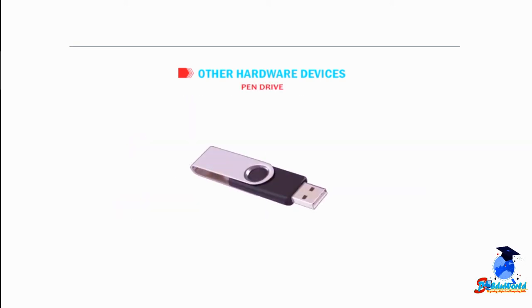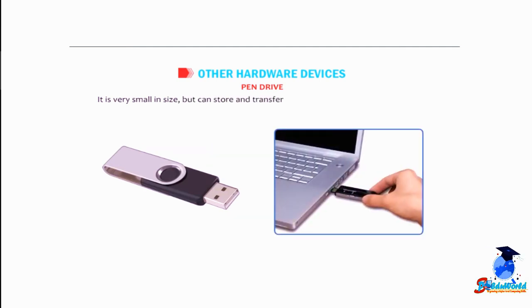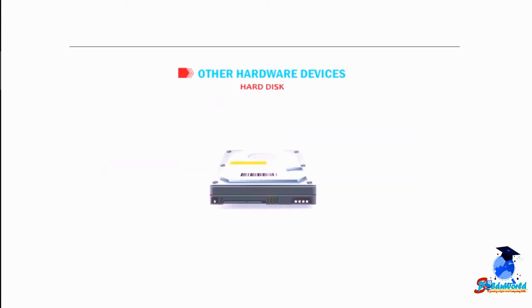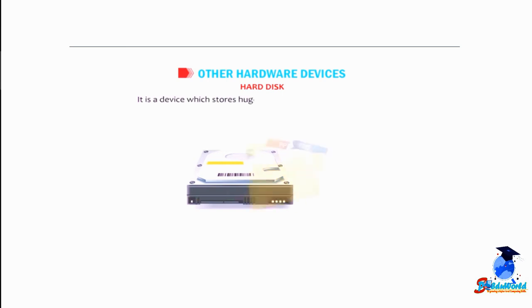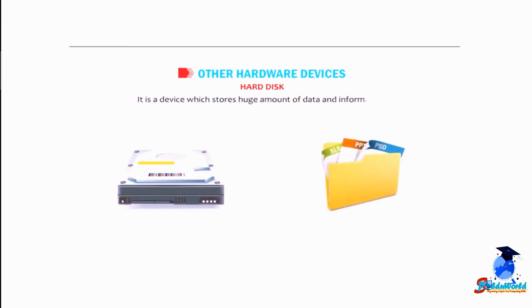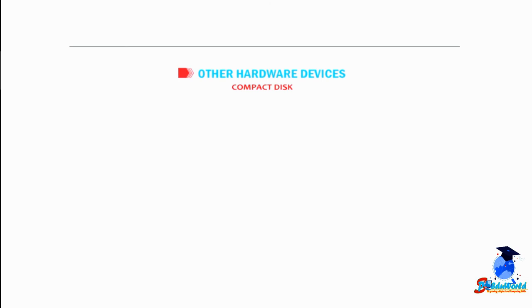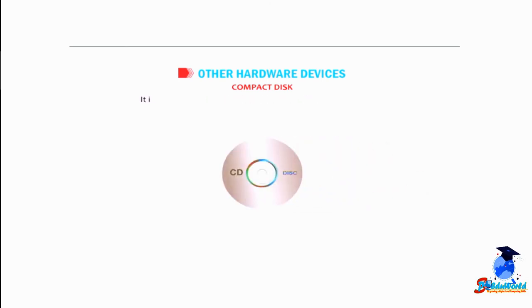A pen drive is very small in size but can store and transfer data from one computer to another, and can be handled easily. A hard disk is a device which stores a huge amount of data and information; it is present inside the CPU box. A compact disc, or CD, stands for compact disc — it is a round, flat, and shiny disc that stores a lot of information.